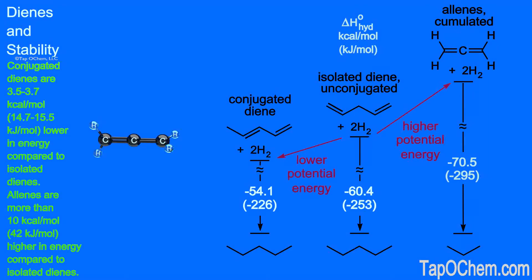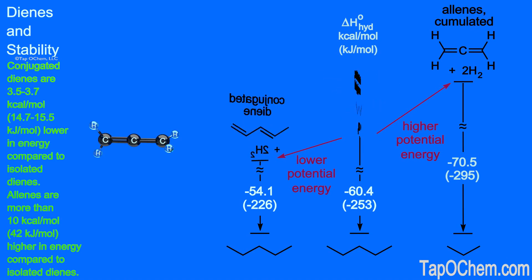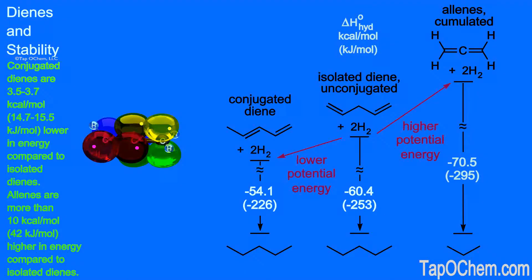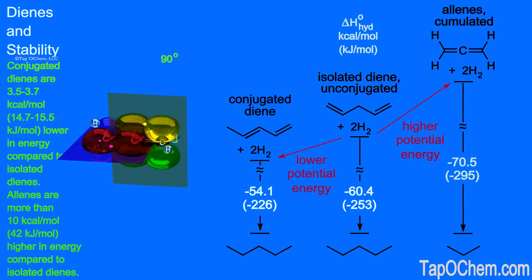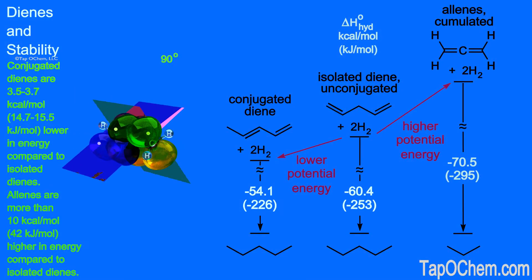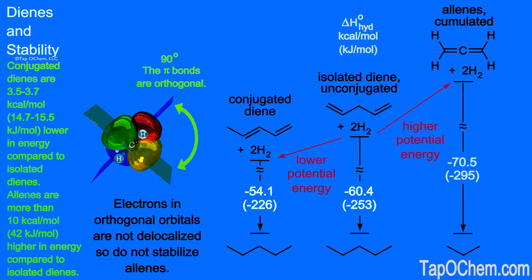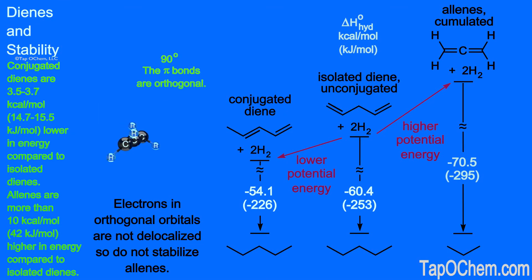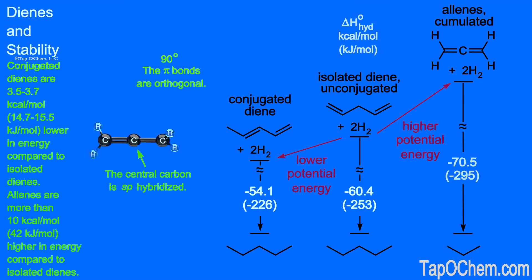This is also a general trend. Allenes are significantly higher in potential energy than conjugated and isolated dienes. The two pi bonds in allenes are at 90-degree bond angles. Even though the pi bonds share the central carbon, the p orbitals on that carbon do not overlap because they are at 90-degree bond angles from one another — they are said to be orthogonal. Electrons in orthogonal orbitals are not delocalized and cannot stabilize allenes. Additionally, the sp hybridization of the central carbon contributes to the increased energy of cumulated dienes.